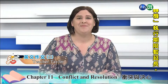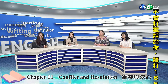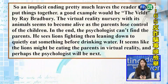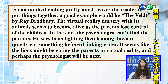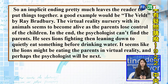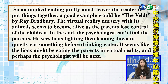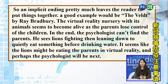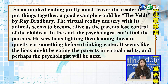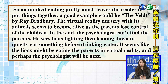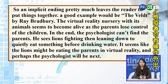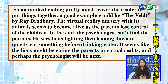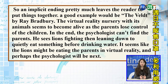Thank you. Now an example of an implicit ending for literature please, Tiffany. An implicit ending pretty much leaves the reader to put things together. A good example would be The Veldt by Ray Bradbury. The virtual reality nursery with its animals seems to become alive as the parents lose control of the children. In the end, the psychologist can't find the parents. He sees lions fighting then leaning down to quietly eat something before drinking water. It seems like the lions might be eating the parents in virtual reality, and perhaps the psychologist will be the next.